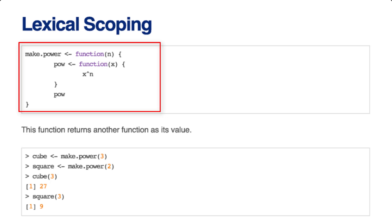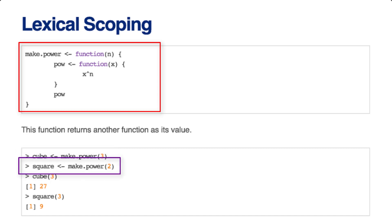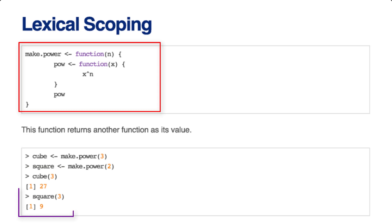I can call make.power passing the number three, and assign the returned function to be called cube. Similarly, I can pass two to make.power and create a function I'll call square. Now when I pass cube the number three, it raises three to the third power, giving 27. If I call square on the number three, it raises three to the second power, giving nine. So I now have one function capable of constructing many different types of power functions.